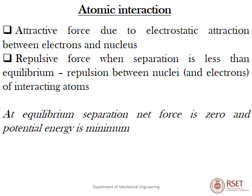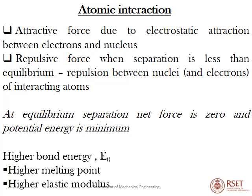Atomic interaction occurs because attractive force is due to electrostatic attraction between electrons and nucleus, while repulsive force arises when separation is less than equilibrium — repulsion occurs between nuclei or electrons of interacting atoms. At equilibrium separation, net force is zero and potential energy is minimum. The bond energy E₀ from the energy graph clearly indicates whether a material has a higher melting point or higher elastic modulus.